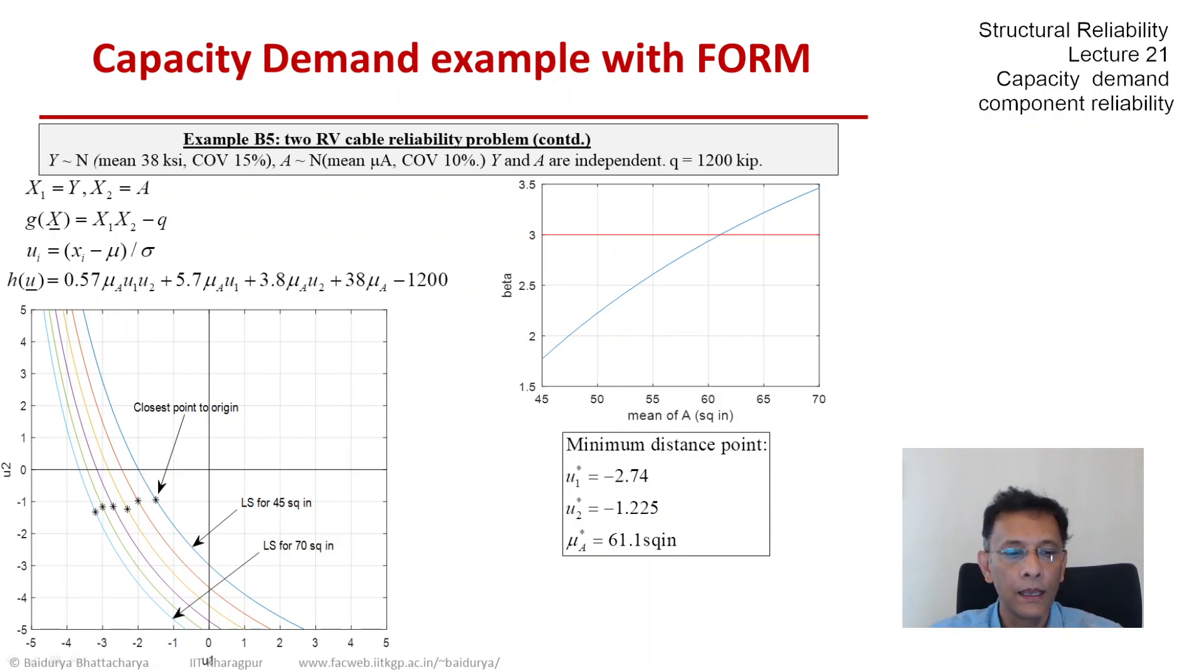So that would be the answer for the checking point values and the corresponding optimal mean area that gives beta of 3. If you are interested in the design point, the design point for yield is 22.4 KSI, which is something we have been observing quite a lot in that region, and the design value for area is about 54 square inches. So the mean has to be something like 61 and the design value a little lower than the mean would be 54.